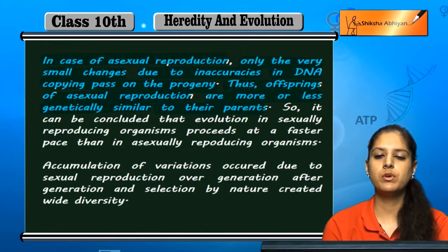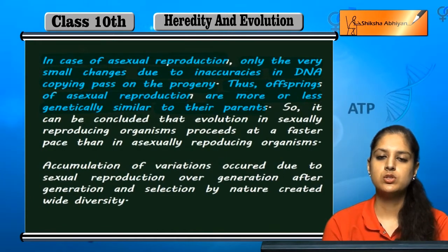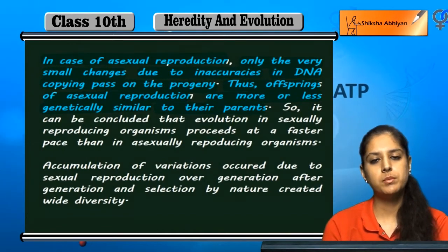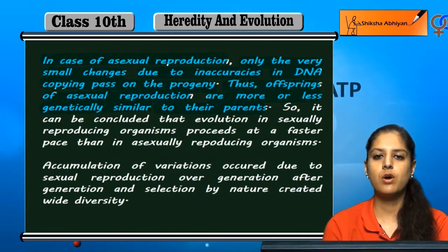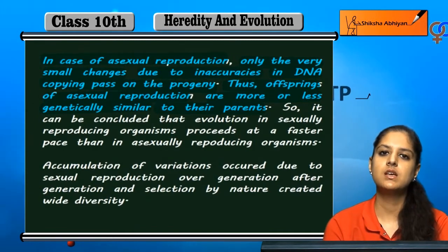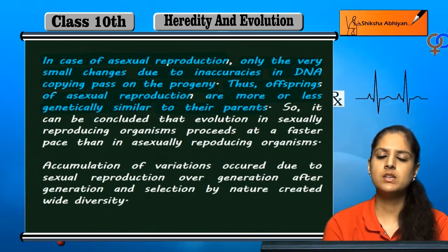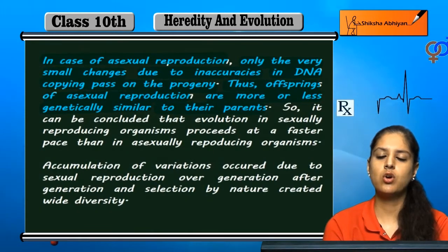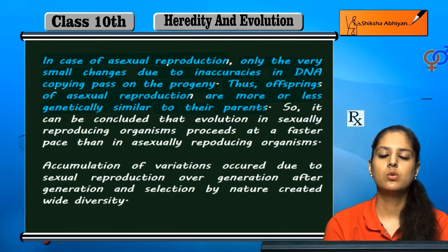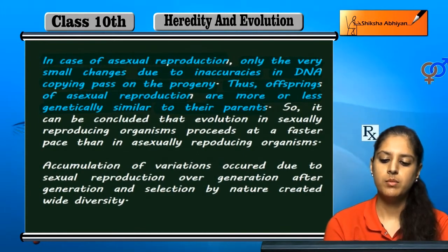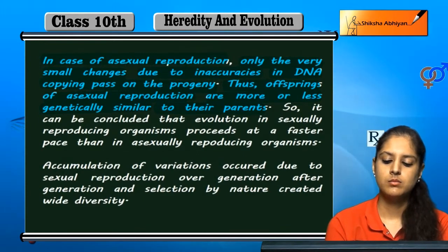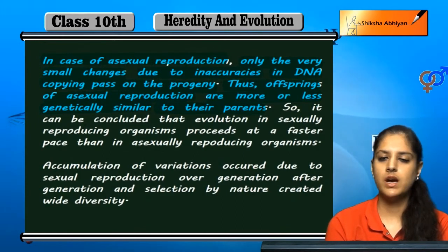In asexual reproduction, the DNA is properly and completely copied, meaning offspring are similar to their parents. Some minor inaccuracies in DNA copying can cause some variations to arise, but more or less they remain the same.